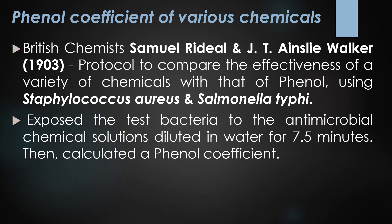In 1903, British chemists Samuel Rideal and J.T. Ainslie Walker established a protocol to compare the effectiveness of various chemicals with phenol. They used two test organisms — Staphylococcus aureus and Salmonella typhi — exposing the bacteria to the diluted antimicrobial chemical solution for 7.5 minutes, then calculating a phenol coefficient for each chemical against both bacteria.